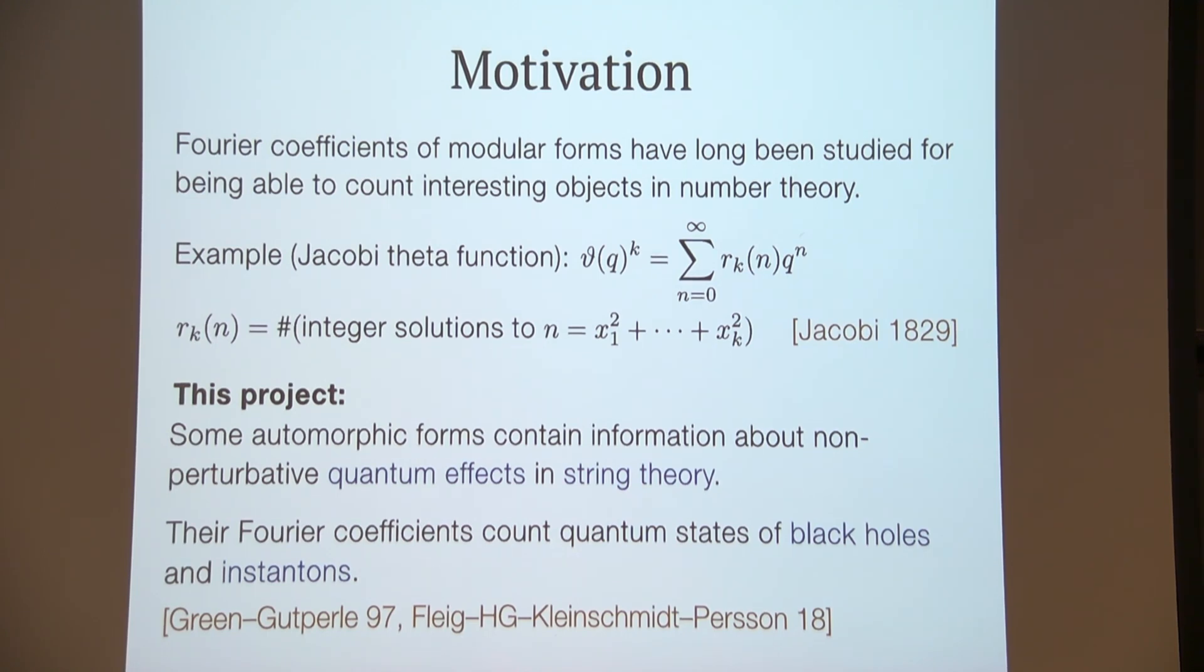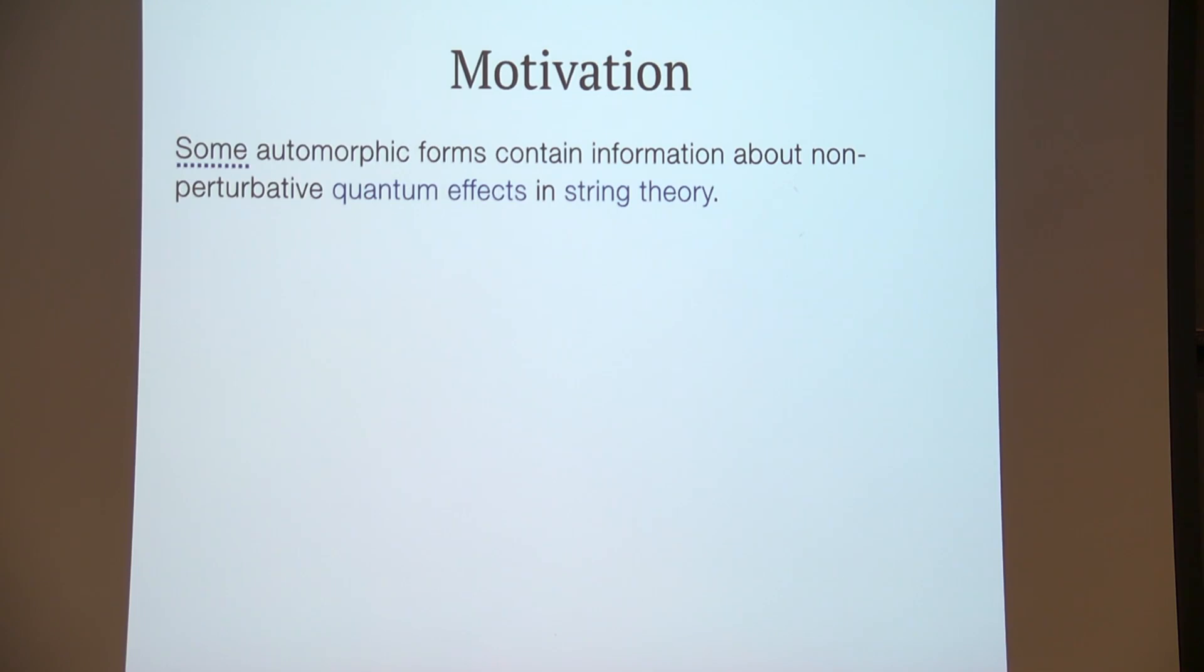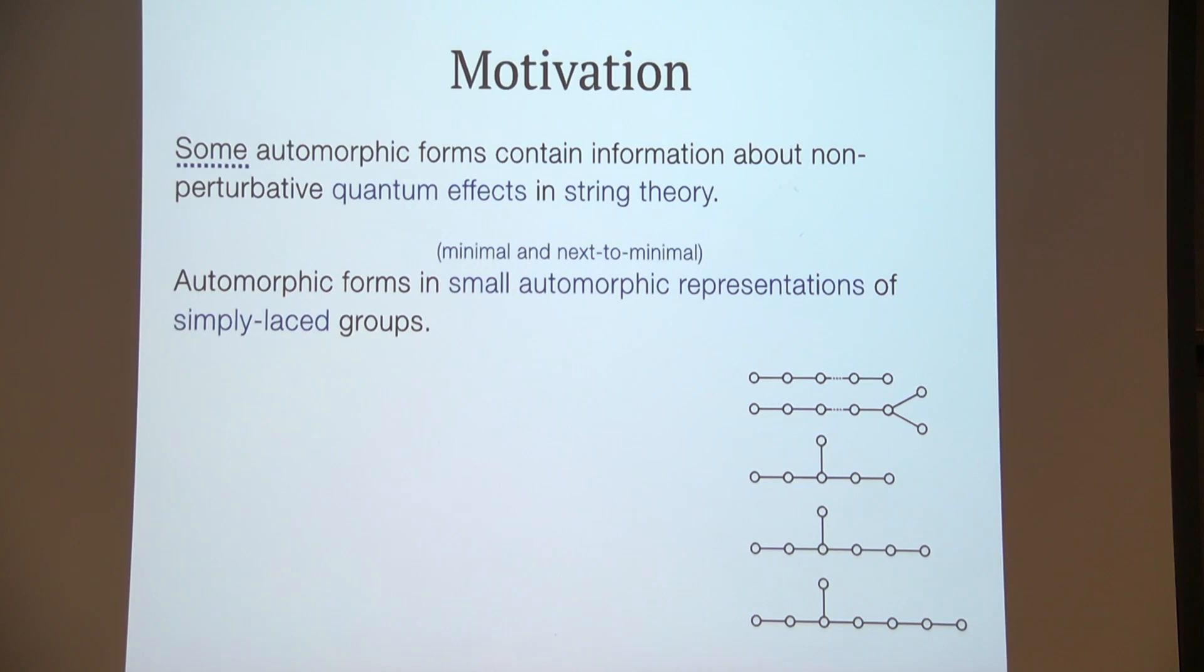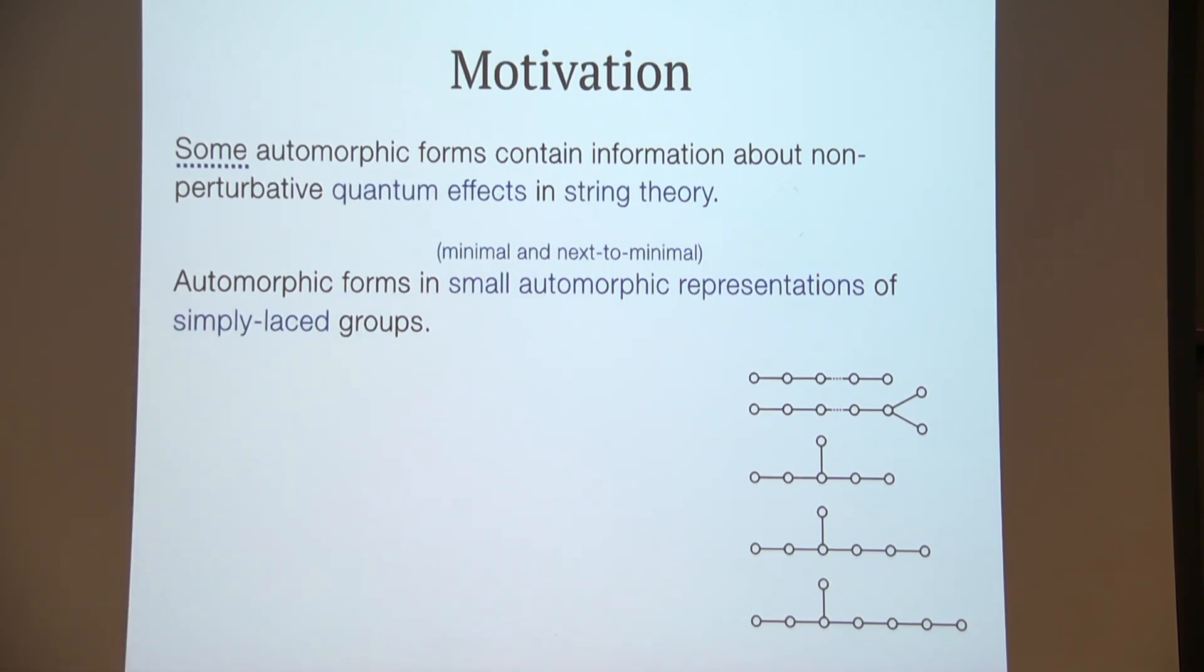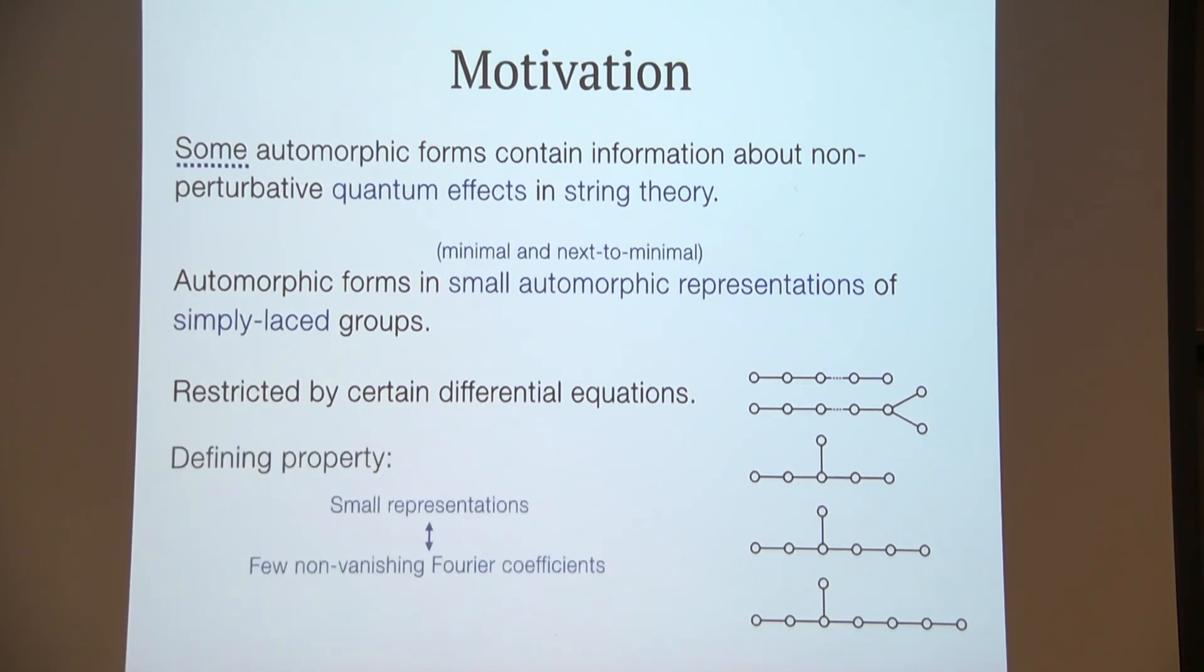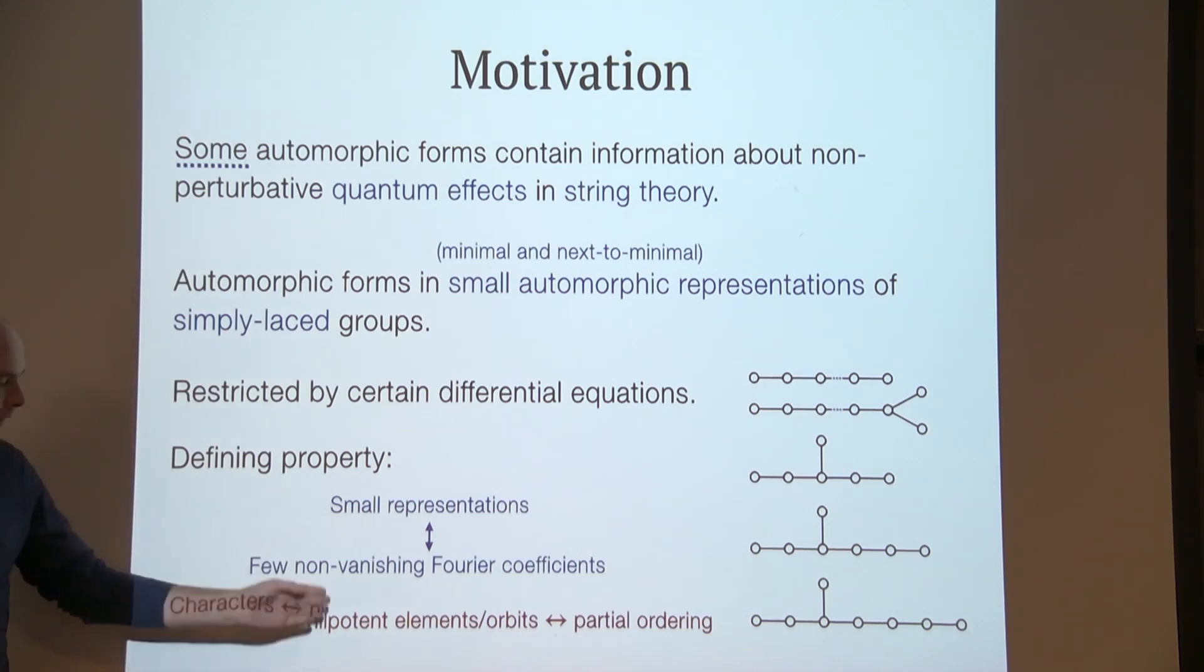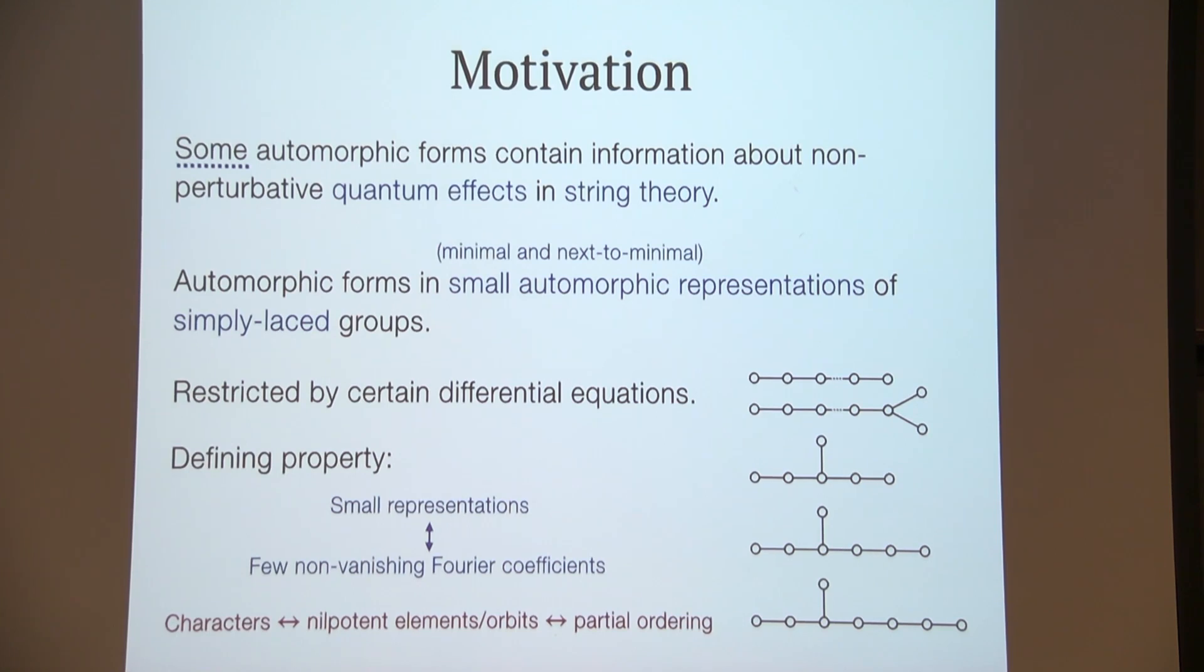But let me specify what I mean by 'some automorphic forms.' I mean automorphic forms in so-called small automorphic representations of simply laced groups. The simply laced groups we can see here—the Dynkin diagrams of type A, D, and E. And by automorphic form in a small representation, we can think of as being restricted by certain differential equations. The defining property is that they have very few non-vanishing Fourier coefficients. We recall that the Fourier coefficients have a character, the mode, and the character can be parametrized by a nilpotent element in the Lie algebra of G. The nilpotent orbits have a partial ordering, and it's this partial ordering that allows us to talk about a minimal and next-to-minimal representation—so that's where the words come from.